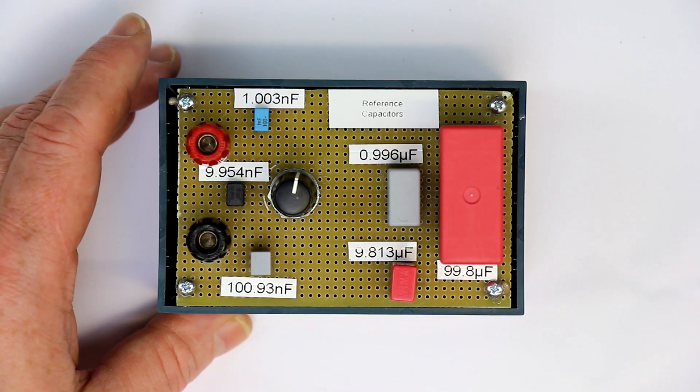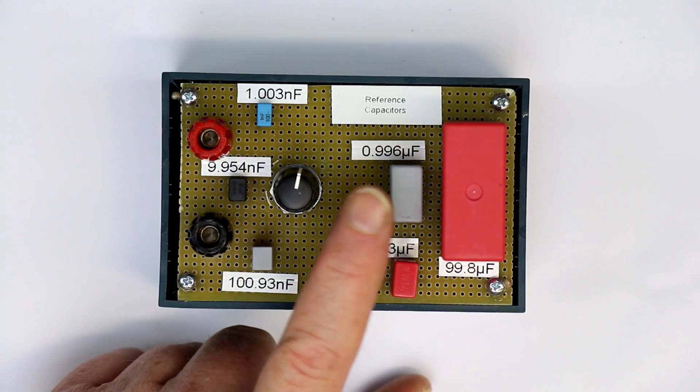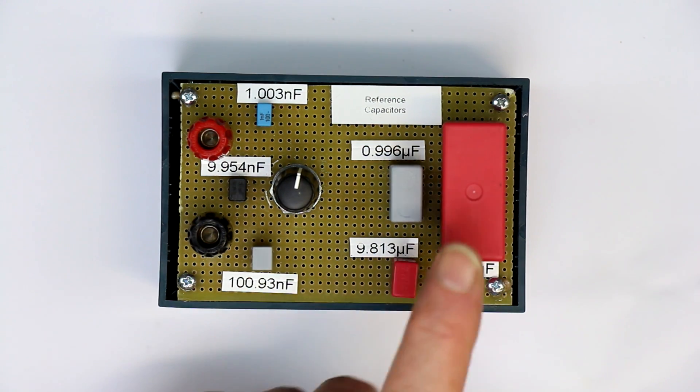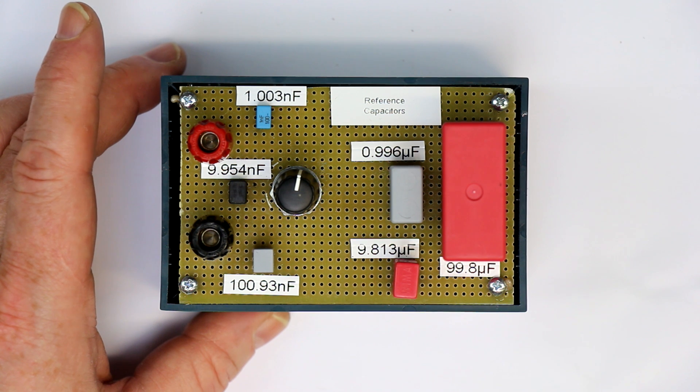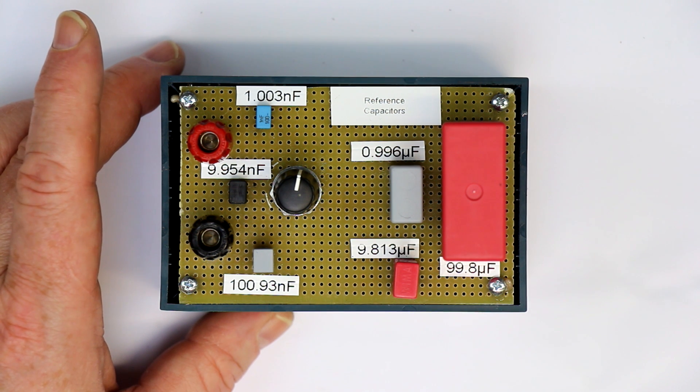And the idea is to rely on the 1% specs of the capacitors up to 1 microfarad, but to make the 10 and 100 microfarad capacitors also a kind of reference capacitor. The idea is just to use my LCR meter, which claims to have in most ranges half a percent accuracy.